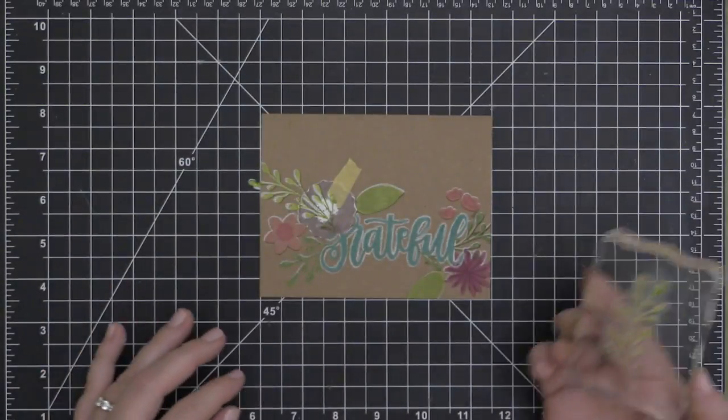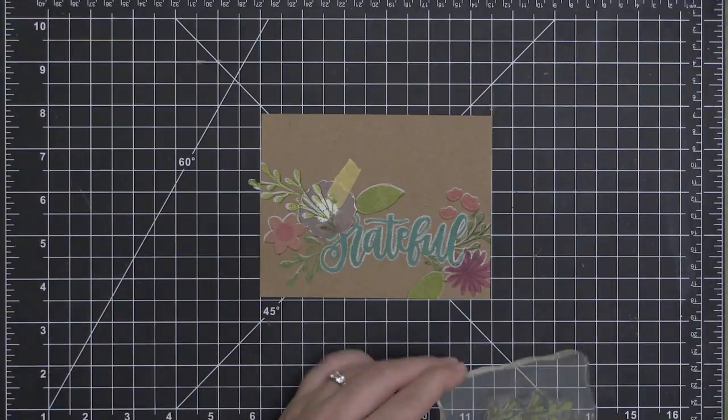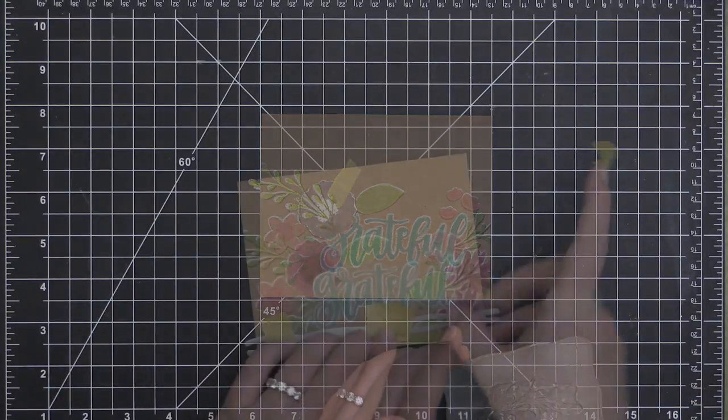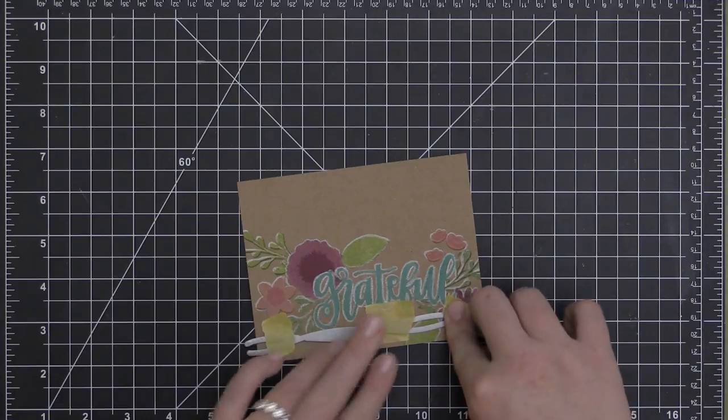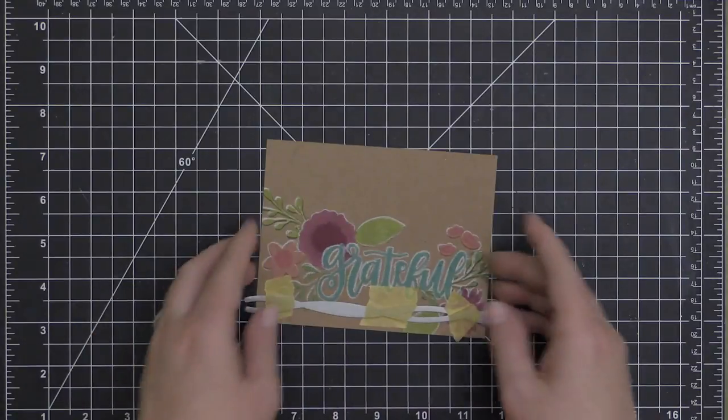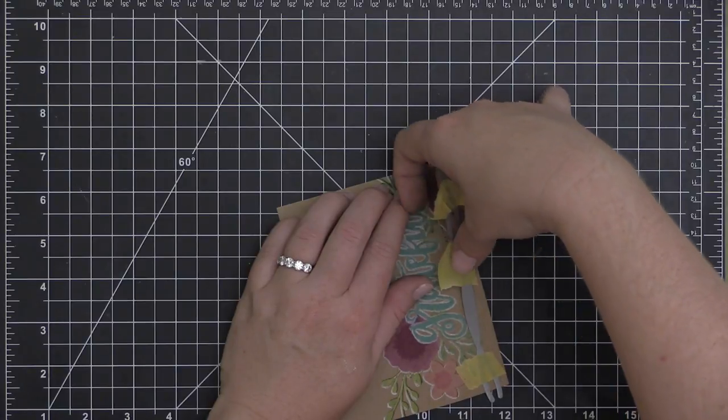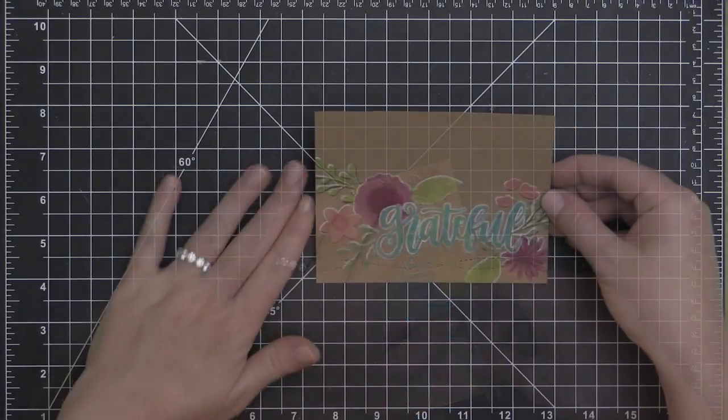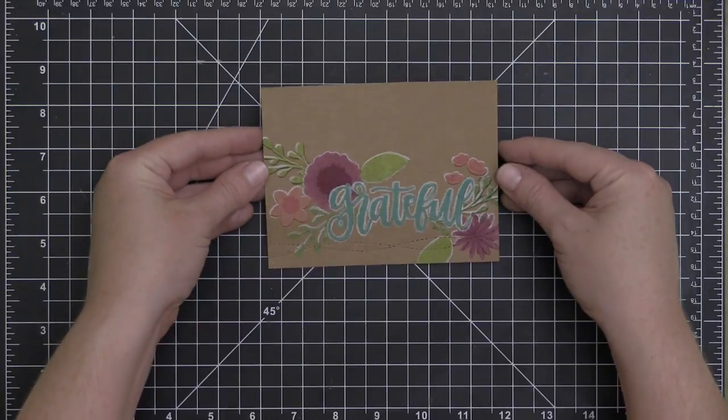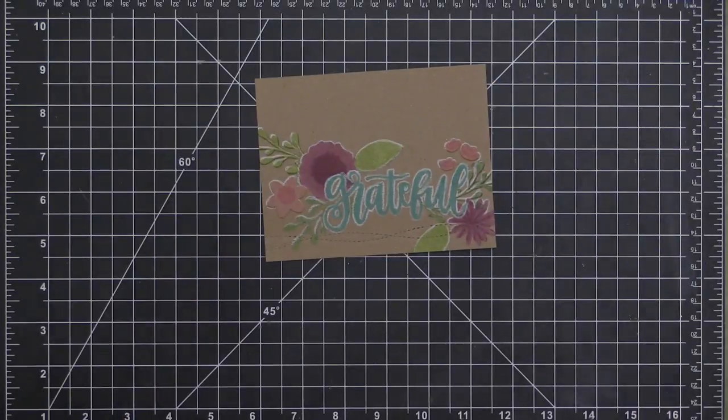I felt like there needed to be something more on that upper left-hand side, so I went ahead and masked that purple flower there at the top and I stamped this vine one more time. You can see I did all of that with just a regular acrylic block. Then I'm going to take this stitch border die from My Favorite Things and run it through my die-cut machine, and I created this beautiful kind of curvy stitch line along the bottom of this card panel.